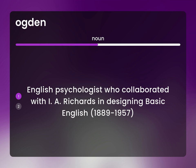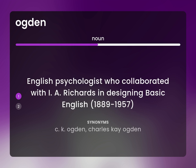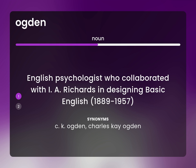C.K. Ogden, Charles K. Ogden. English psychologist who collaborated with I.A. Richards in designing Basic English, 1889–1957.